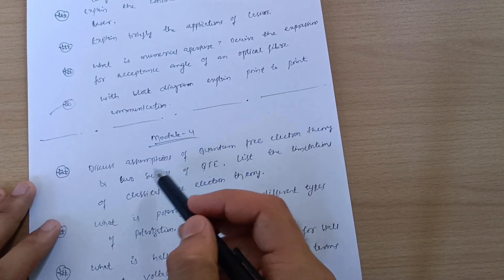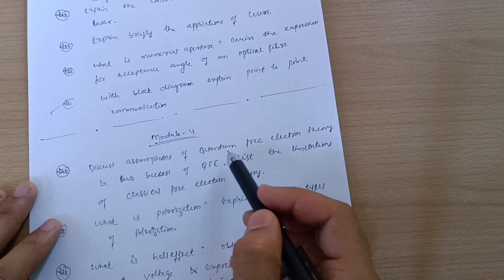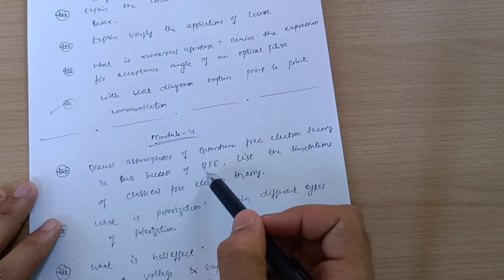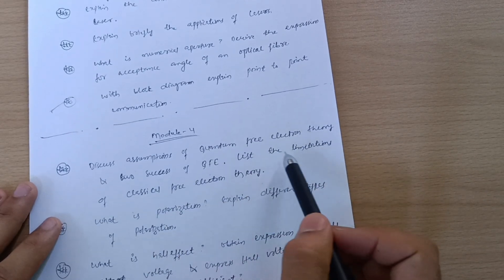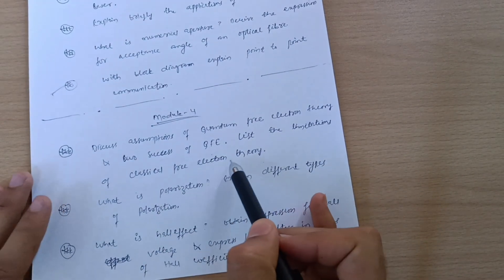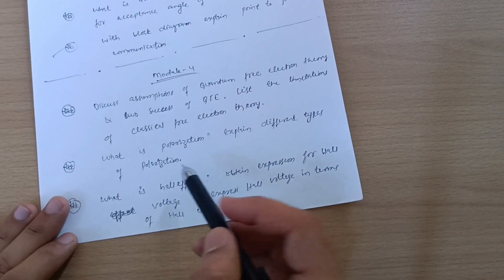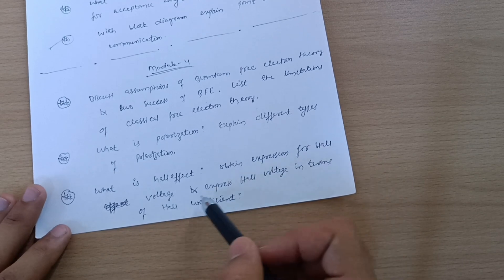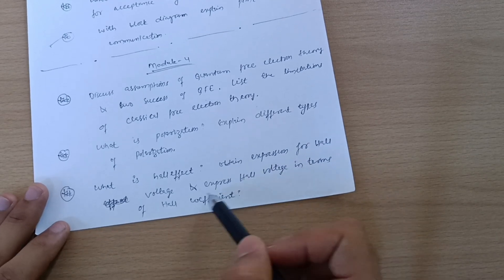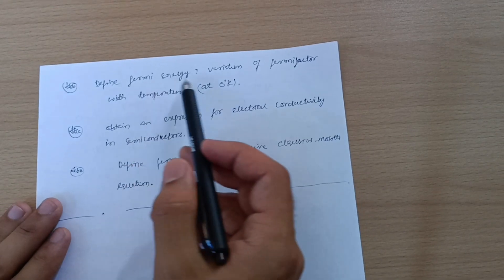Next is Module 4. Discuss assumptions of quantum free electron theory and two successes of quantum free electron theory. Also give the limitations of classical free electron theory. What is polarization? Explain different types of polarization. What is Hall effect? Obtain expression for Hall voltage and express Hall voltage in terms of Hall coefficient.